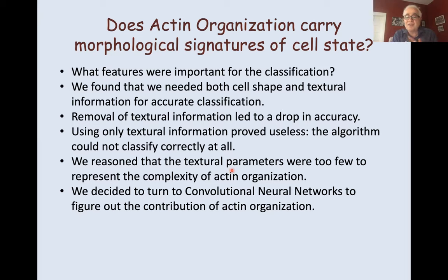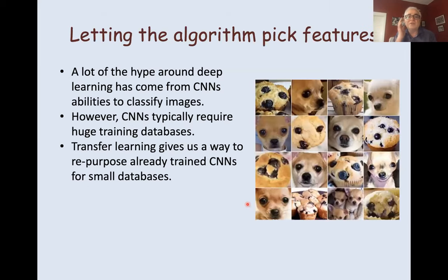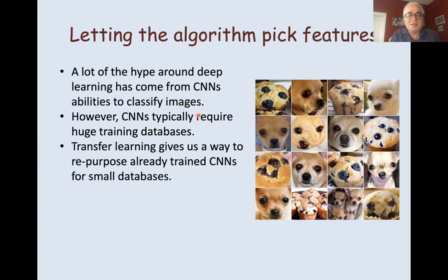We reasoned that the textural parameters we were using were too few to represent the complexity of actin organization. The fractal dimension is one number; haralick features are about 24 in number but highly mutually correlated — so probably two or three effective dimensions. The band-based measures are maybe three or four effectively. We have a very small handful of textural parameters. We spent some time trying to develop new textural parameters, then decided to go back to machine learning — to CNNs, convolutional neural networks, which take the raw image itself and let the algorithm pick the features instead of handcrafting them. A lot of the recent hype around deep learning has come from CNNs' ability to classify images.